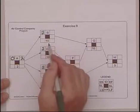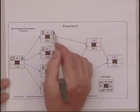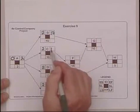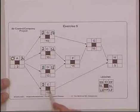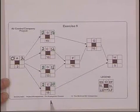Now we simply add the early start to the duration. 2 and 10 is 12, 2 and 13 is 15, 2 and 18 is 20.